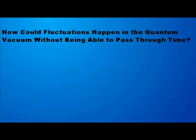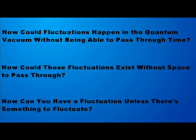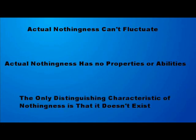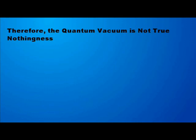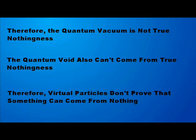The quantum void still definitely exists and is therefore something, even though it lacks mass. Think about it. How can fluctuations exist in the quantum void if they can't pass through time? How can they exist without passing through space? Most importantly, how can there even be fluctuations without something to fluctuate? Actual nothingness doesn't fluctuate. It doesn't have any properties or abilities, and its only distinguishing characteristic is that it doesn't exist. So you can't claim that the quantum void is nothingness, you can't claim that it could come from actual nothingness, and therefore you can't claim that virtual particles prove that something comes from nothing.